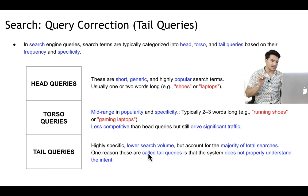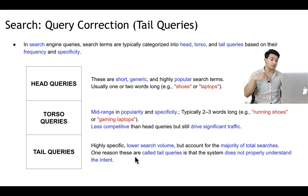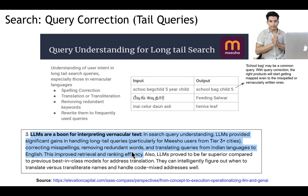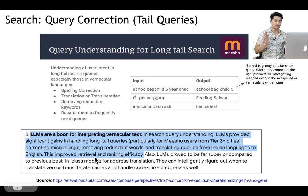The last category is tail queries, which consist of the majority of total searches, but per-query frequency is low. One reason they are tail queries is because the system is not able to understand the intent properly. What Misho did to improve performance on tail queries was they used LLMs. In search query understanding, LLMs provide significant gains in handling tail queries, particularly for Misho's users from tier-three cities — correcting misspellings, removing redundant words, and translating queries from Indian languages to English. This improved retrieval and ranking efficiency.